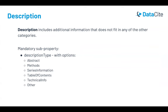Another important property that goes hand in hand with subject is description. This is useful for discovery as well, and you can also use the description to include any additional information that doesn't fit elsewhere in the schema. There are several different types of description, and this can be indicated using the mandatory description type subproperty — for example, abstract, methods, or technical information.